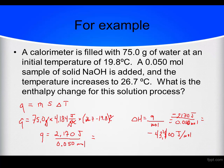The last step is that these are usually written in kilojoules per mole, not joules per mole. So we just move the decimal place three spaces and change to kilojoules. So negative 43.4 kilojoules per mole is the better answer for delta H here.